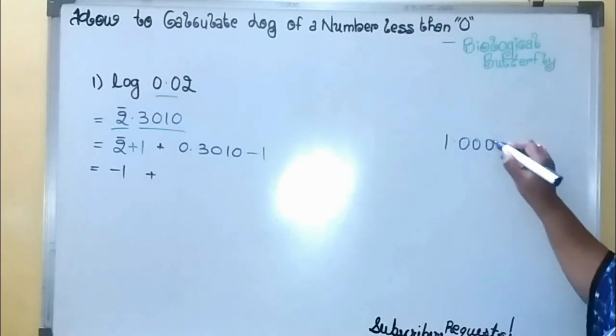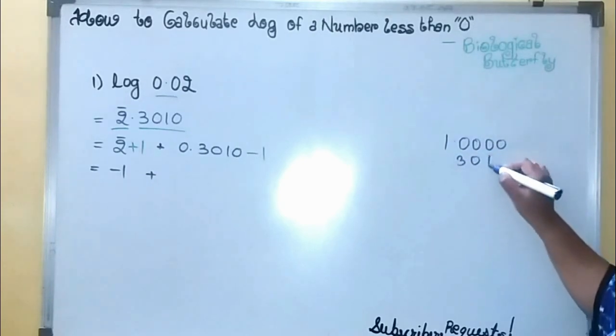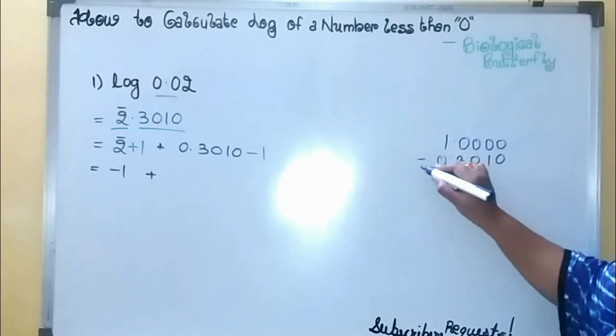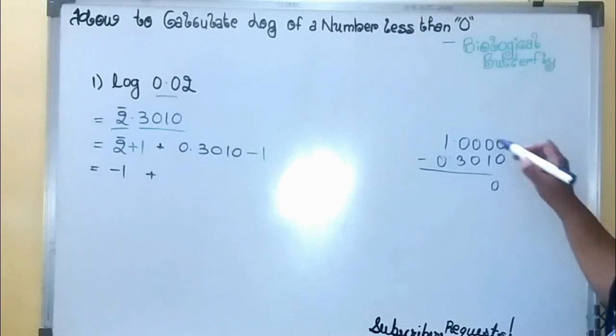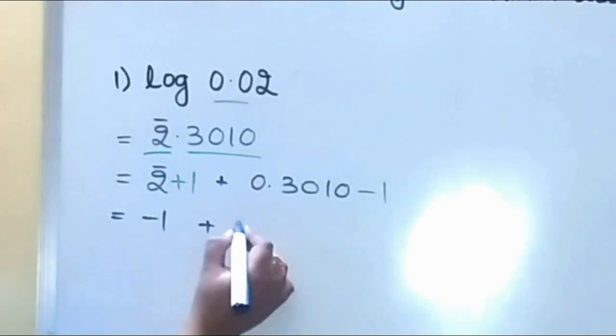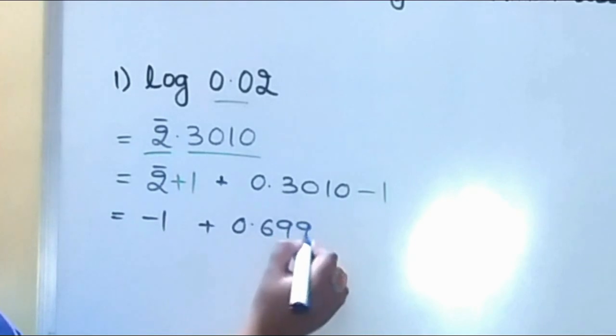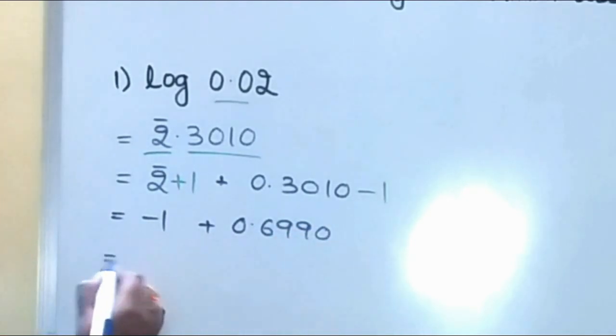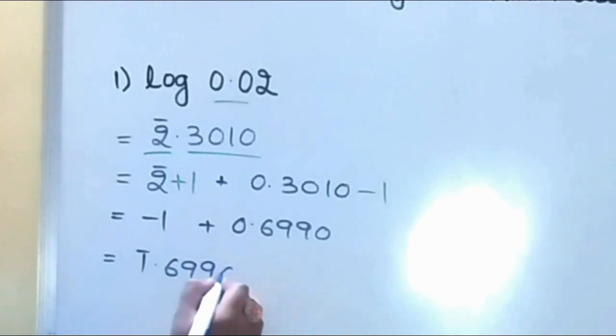So I will write it down here: 3010, and I will do subtraction. What you will do is club this number together. It will become one bar point 6990, which is the answer to your question.